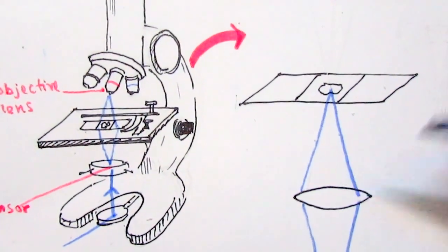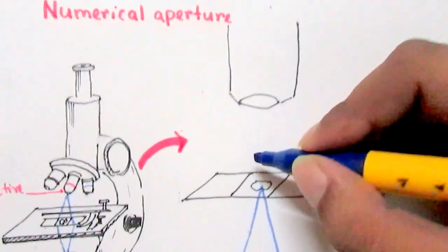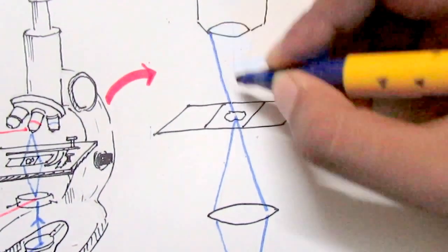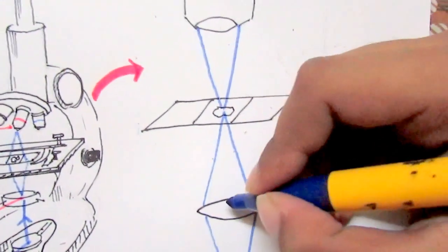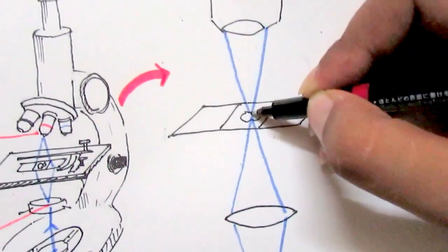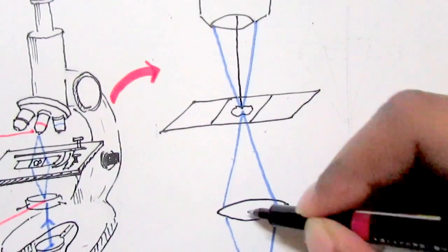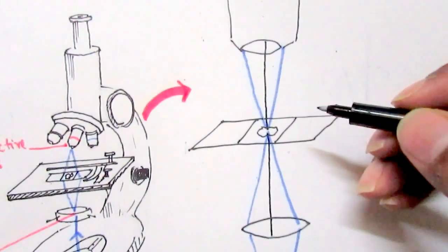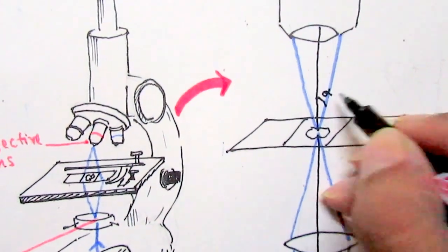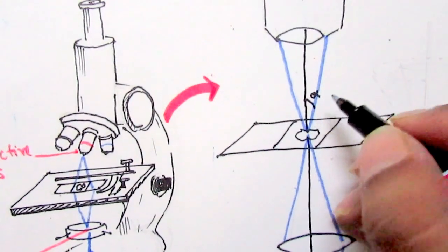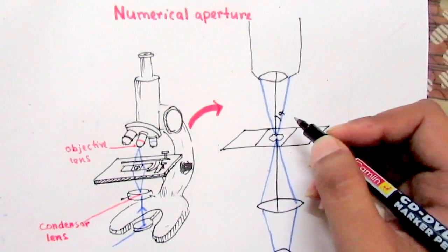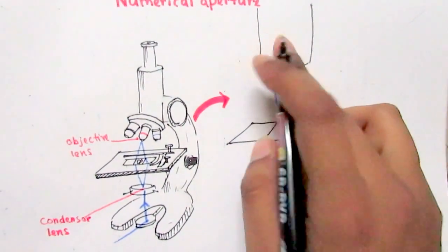From the specimen, light is transmitted to the objective lens. Here I am drawing the optical axis — this is the optical axis — and the angle with the optical axis is alpha. Let's call it alpha.